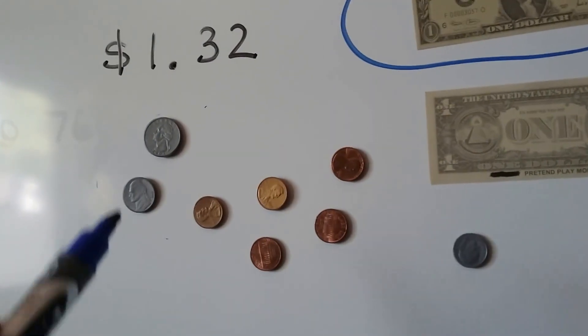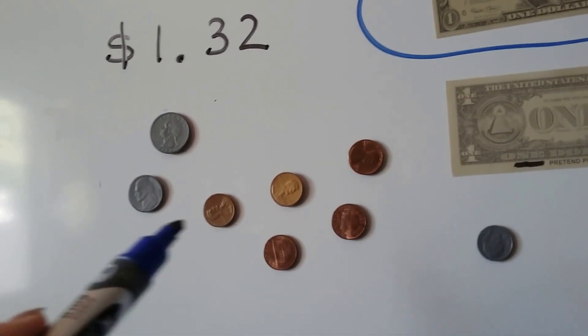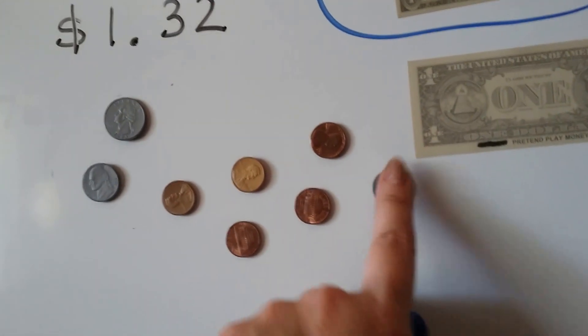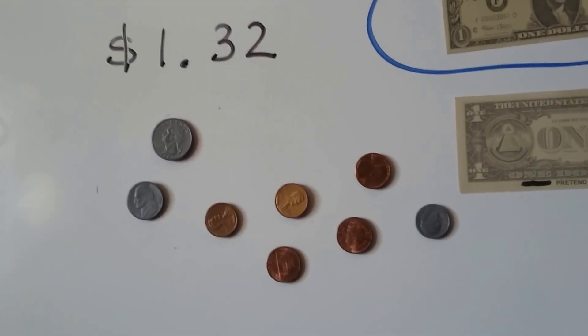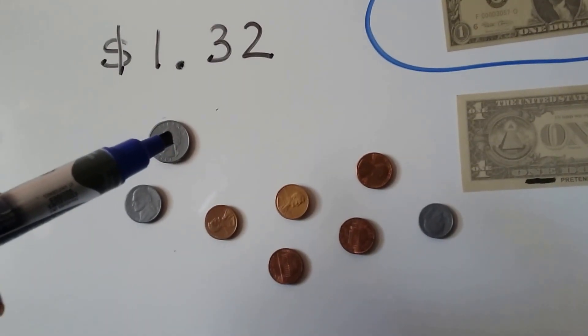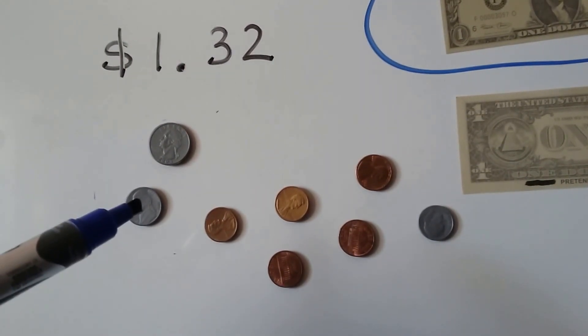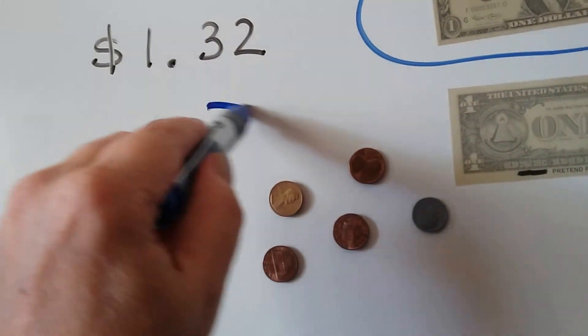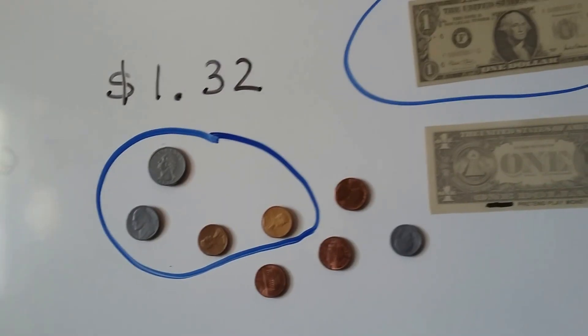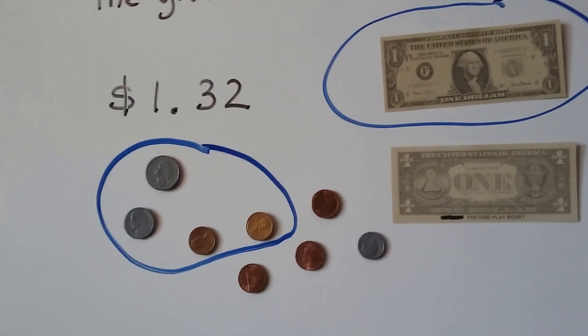Now we need to circle 32 cents. Well, we have a quarter, a nickel, 5 pennies, and we have a dime over here, don't we? How can we make 32 cents? Here's 25. And if we add 5 to it, that's 30, 31, 32. So we could do these coins to make the 32, couldn't we? That would be a dollar and 32 cents.